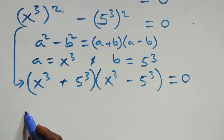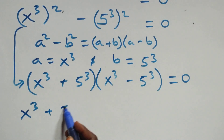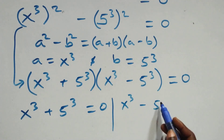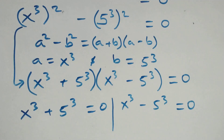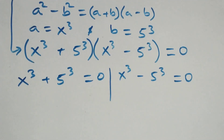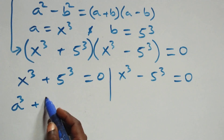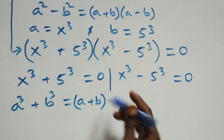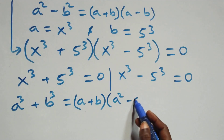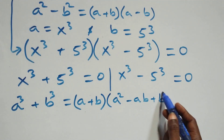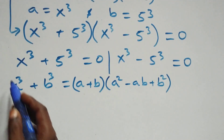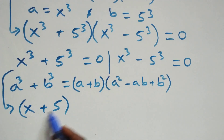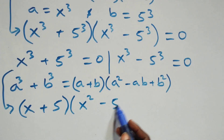We have two possible cases. The first one: x raised to power 3 plus 5 raised to power 3 equals zero. Solving this using the sum of cubes identity — a cubed plus b cubed equals a plus b times bracket a squared minus ab plus b squared — we get x plus 5 times bracket x squared minus 5x plus 5 squared equals zero.